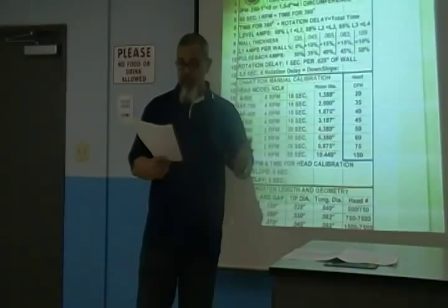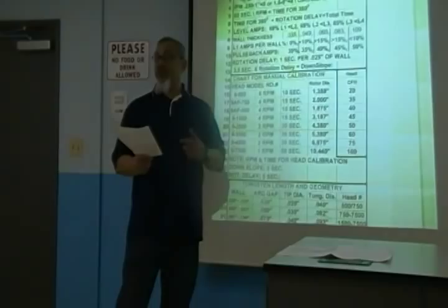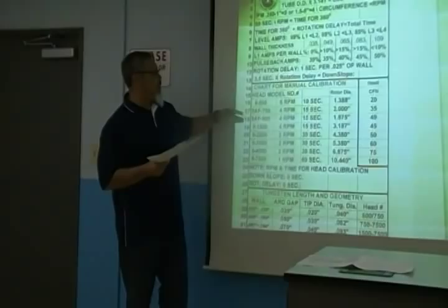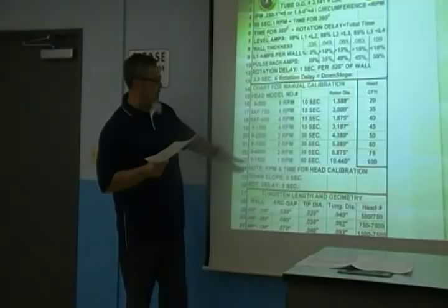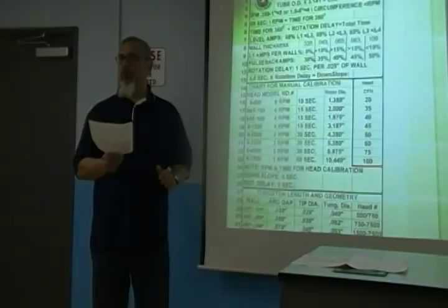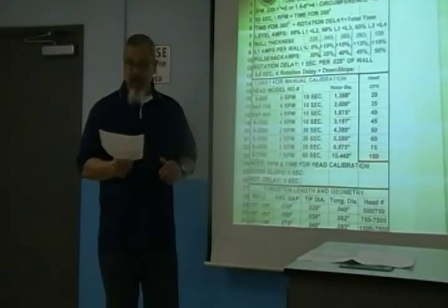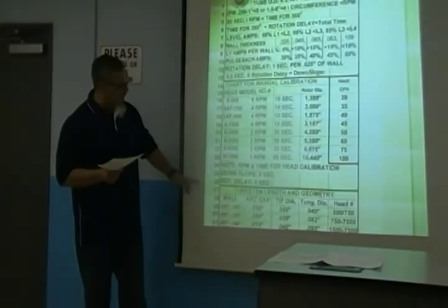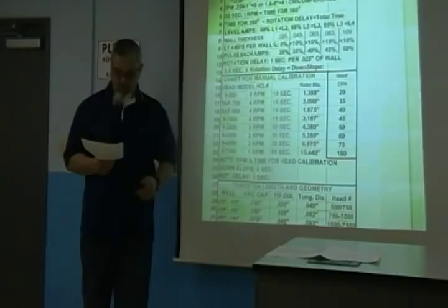On key formula number one, it asks for rotor OD, which pertains to weld head information. If you need weld head information, you go to your information sheet and look on lines 14 through 23 — any questions about a weld head, that's where you'd find it. If you were looking for arc gap, which is also part of key formula number one, it pertains to tungsten. Anything asked about tungsten you will find between lines 27 and 31.